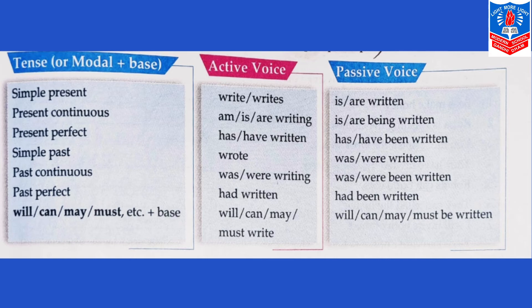Next, for modals — will, can, may, or must — plus base form: whatever is given in the question with these verbs, we will write in passive as 'will/can/may/must be written'. This way, we will change all these verbs. All the rules are given here — how you will change from active to passive. This table is very important, so children, learn this table and study it well.